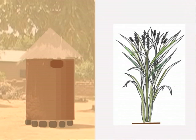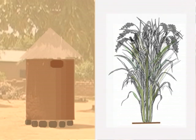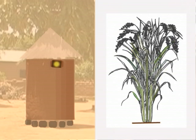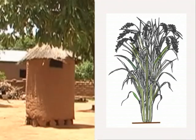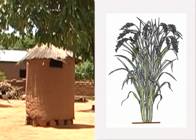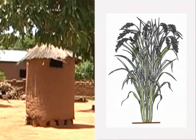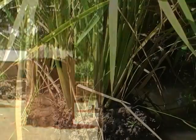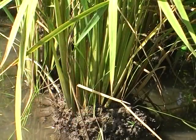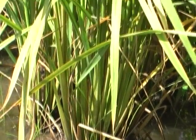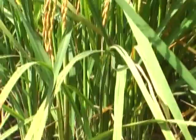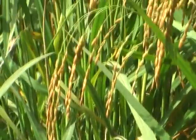After flowering and until maturity, the rice plants fill their grains. This is like the granary being filled. Nutrients are needed at all three stages: to make the foundation, to construct the walls and roof, and to fill the granary.